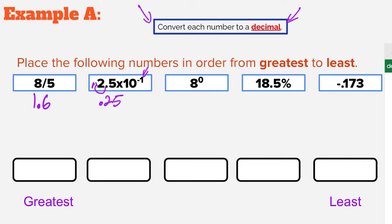Next we have 8 to the 0 power. Anything to the 0 power is 1 — doesn't matter if it's 8 or a thousand to the 0 power. The next number is 18.5%. We move our decimal two places to the left to convert a percent to a decimal, giving us 0.185. Again, if unsure, type it into the decimals calculator. And the last number, negative 1.73, is already in decimal form.